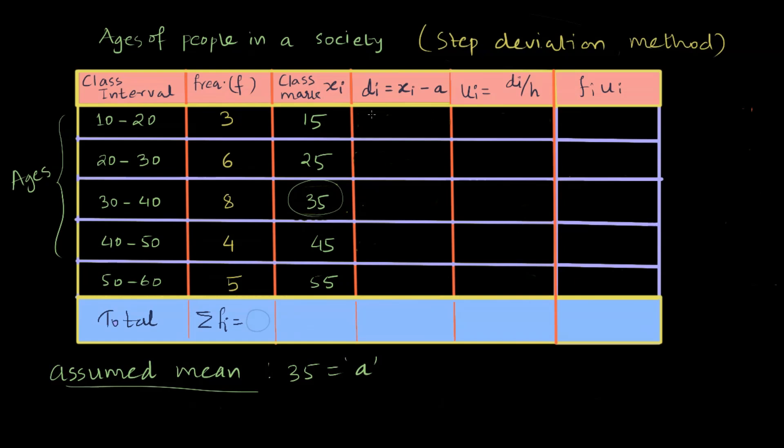Let us try and find out the deviation of each class mark from the assumed mean. Deviation is defined by the subtraction xi minus A. So in this case, 15 minus 35, and this will give me minus 20 for the first one. Then 25 minus 35, which is minus 10.